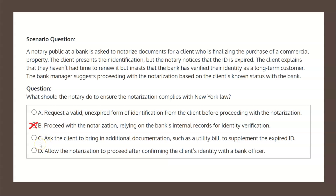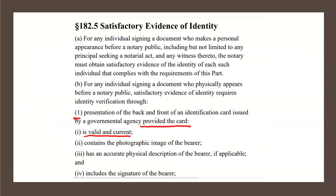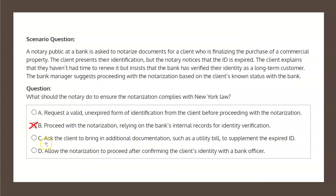Choice C states: ask the client to bring in additional documentation, such as a utility bill, to supplement the expired ID. This is also incorrect. If we go back to the law, it states that the ID must include a photographic image of the bearer. A utility bill does not include a photographic image, and therefore choice C is not the correct solution.